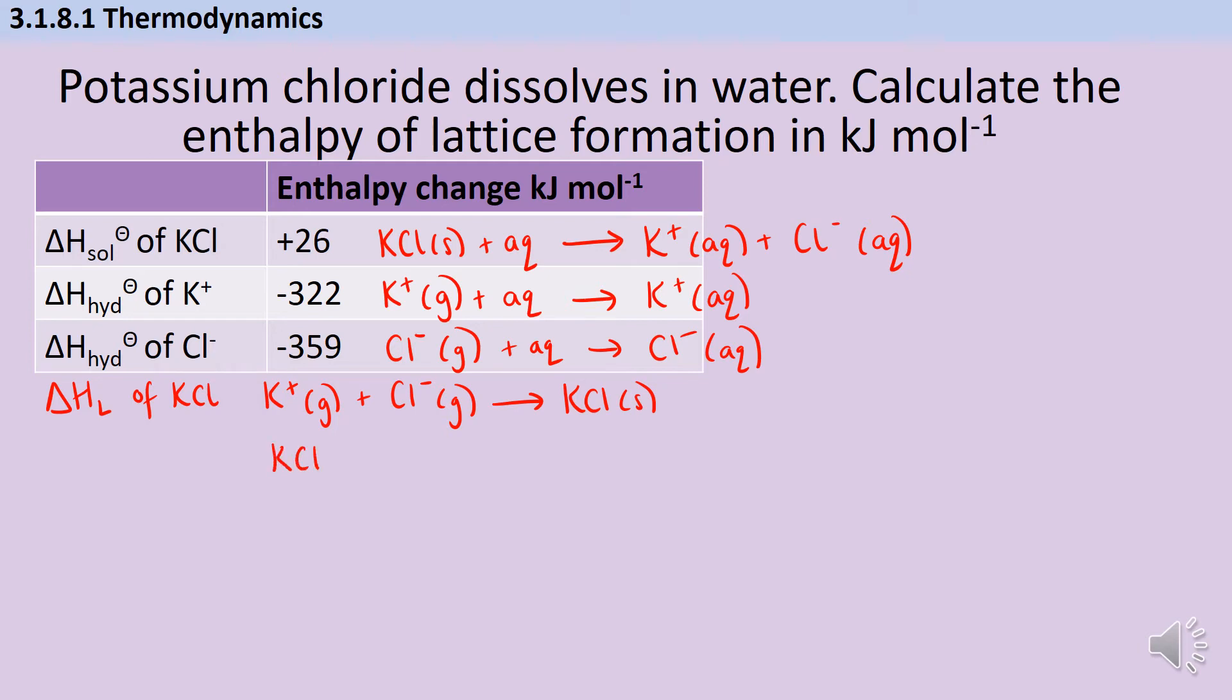I'm going to start with my enthalpy of solution. It doesn't really matter which order you put them in or where you start, as long as they all kind of join up together. I can see that finishes with the aqueous potassium and chloride ions, and my second and third equations also finish with them. So I'm going to do my gaseous potassium and my gaseous chloride and put those two going like this. We're going to finish in the same place.